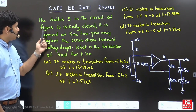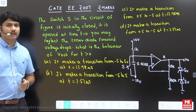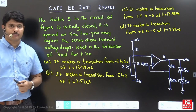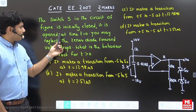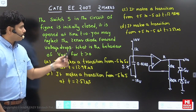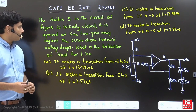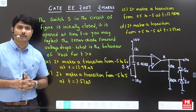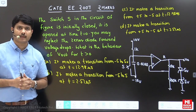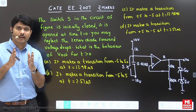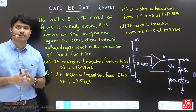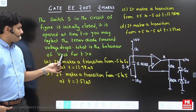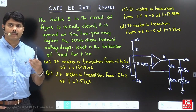The switch S in the circuit is initially closed — that means the switch is in parallel with the capacitor. It is opened at time t = 0. You may neglect the zener diode forward voltage drop, meaning when the zener diode is in forward bias, treat it as a short circuit. The question asks: what is the behavior of V_out for t greater than zero?